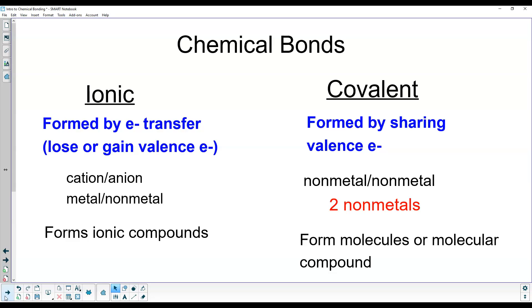We'll talk about covalent later, but we're going to focus first on ionic. You might wonder: do two metals ever bond together? The answer is yes — but when metals bond together, they don't really form compounds. They form what are known as alloys, which are mixtures of metals. The easiest example is steel — it's mostly iron, but it also contains nickel, carbon, and other things. We're not going to focus a lot on metallic bonding.